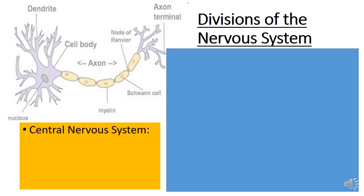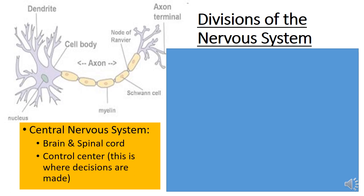To do this we have two key divisions in the nervous system. First, we have the central nervous system — the part most people are very aware of: the brain and the spinal cord. This is considered the control center, where all of the decisions are made. For example, the decision that it's cold and therefore the body needs to shiver is made in the brain or the spinal cord. The spinal cord can make some decisions on its own — reflexes don't have to travel all the way up into the brain.